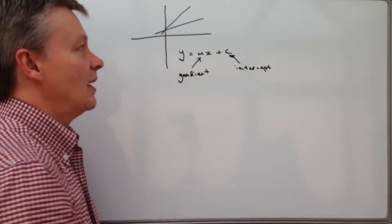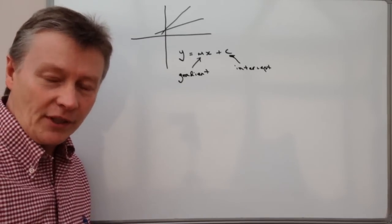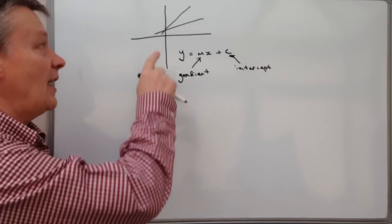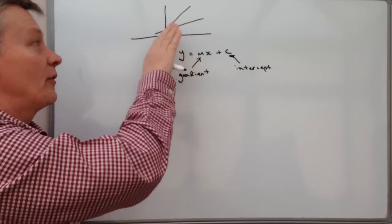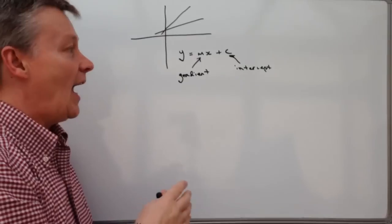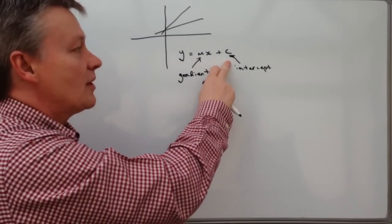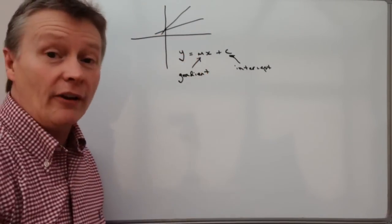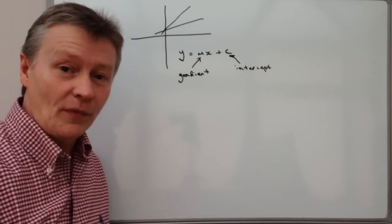And this c here means the intercept. You can imagine that if you're describing a straight line on a graph, then really the two things you need to know is how steep it is, so whether it's going to go really steep like that or not so steep, and also where it crosses the y axis, which is this little bit here. In other words, where it actually starts from.